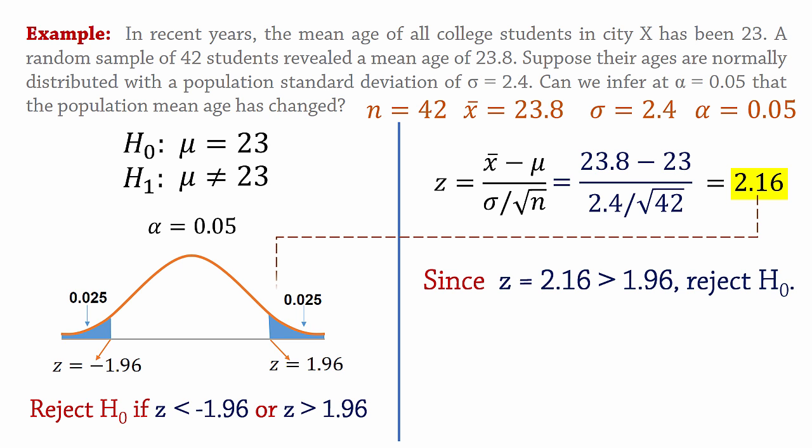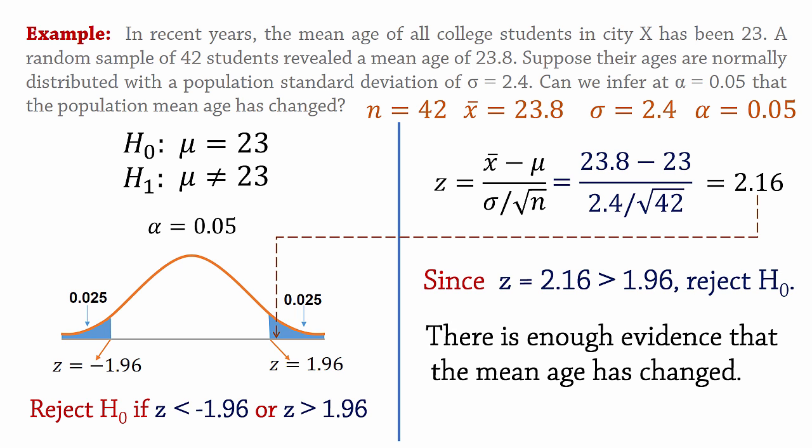Since z equals 2.16 is greater than 1.96, we reject the null hypothesis. Because the null hypothesis which states that the mean age is equal to 23 has been rejected, we then have to support the alternative that states that the mean age has changed. So we have enough evidence to conclude that the mean age has changed at alpha equals 0.05.